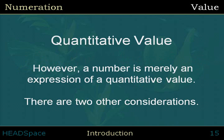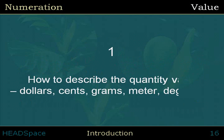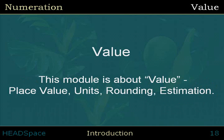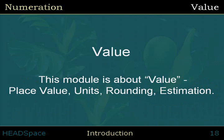However, a number is merely an expression of a quantitative value. There are two other considerations: how to describe the quantity values — for example, dollars, cents, grams, meters, and degrees — and how to express the resulting value so that it is more readable and understandable. This module is about value, place value, units, rounding, and estimation.